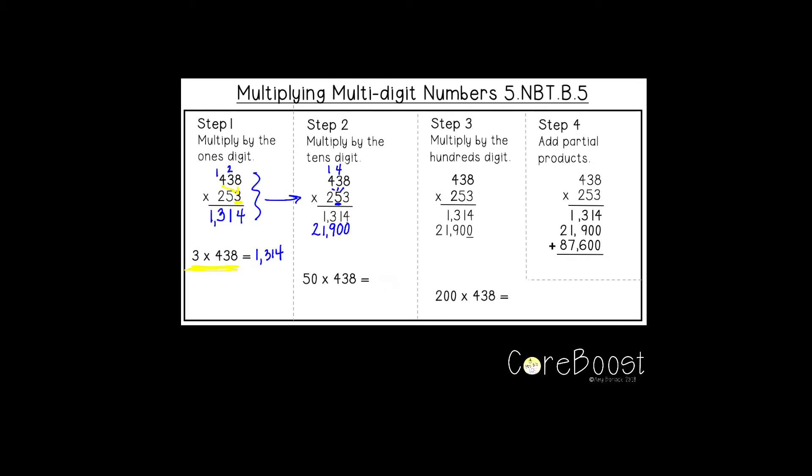Five times four is 20, plus one is 21. That answer is 50 times 438, which equals 21,900, because this five is in the tens place.